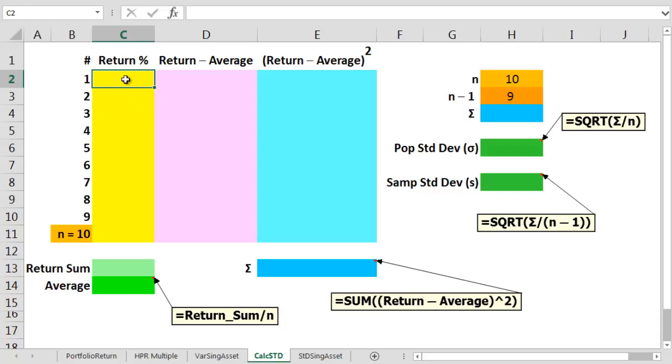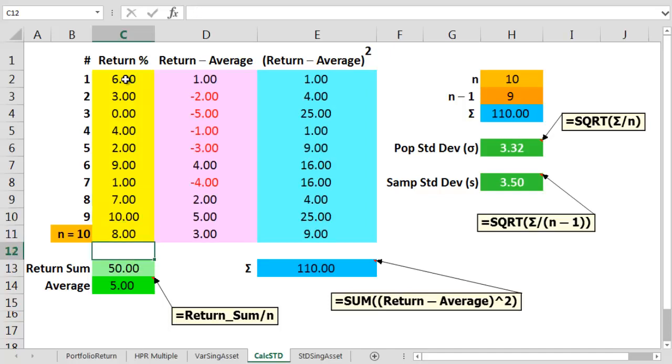So, on this amazing spreadsheet, we insert those numbers again. 6%, 3%, 0%, 4%, 2%, 9%, 1%, 7%, 10%, and finally that 8%. The total number of returns we already know as 10.